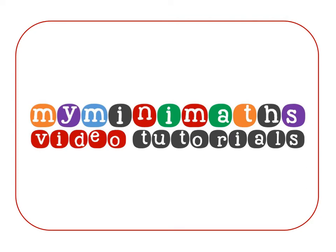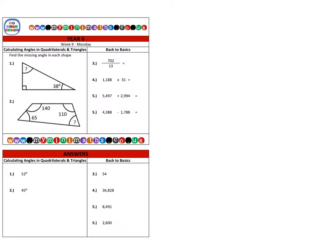Hello and welcome to today's myminimaths.co.uk video tutorial. Today we're going to be calculating missing angles in quadrilaterals. First of all, we're on to question one, which is this triangle. The first thing we need to know is that the sum, or total, of all three angles in any triangle always add up to 180 degrees.